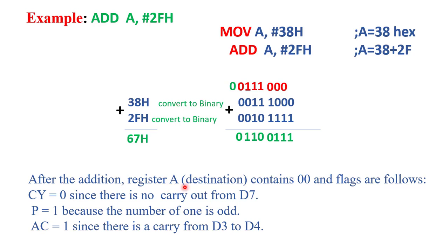After the addition, the result is stored in the accumulator register. The flags affected are: Carry Flag is set to 0, because there is no carry out from the D7 bit. Parity Flag is set to 1 because the result contains 5 ones — an odd number. Auxiliary Carry Flag is set to 1 because there is a carry from D3 to D4. In this way, the PSW Flag Register bits get affected.